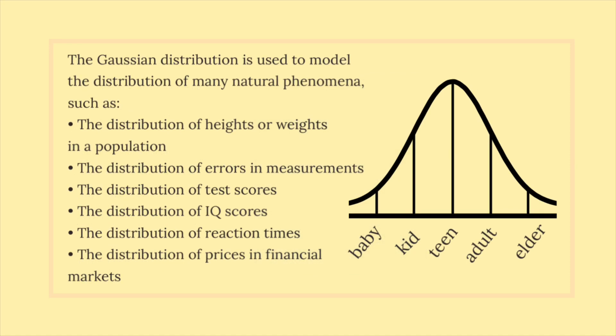The Gaussian distribution is used to model the distribution of many natural phenomena, such as the distribution of heights or weights in a population, the distribution of errors in measurements, the distribution of test scores, the distribution of IQ scores, the distribution of reaction times, the distribution of prices in financial markets.